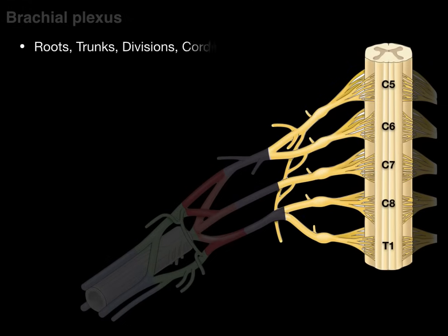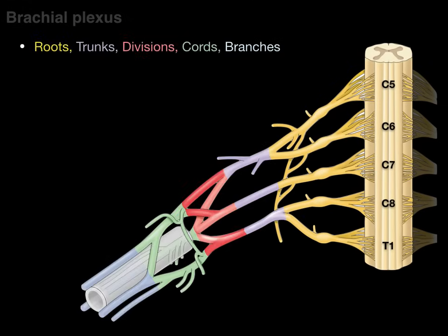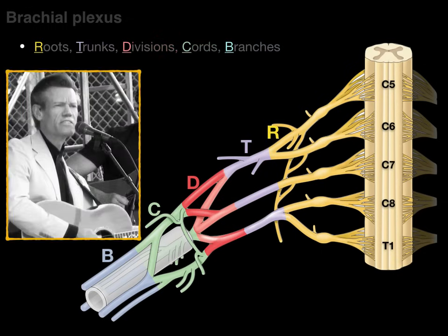The roots, trunks, divisions, cords, and branches are the divisions from proximal to distal of the brachial plexus, and it looks like this: there are the roots, there are the trunks in purple, there are divisions in red, there are the cords in green, and there are the terminal branches or branches in blue at the end.